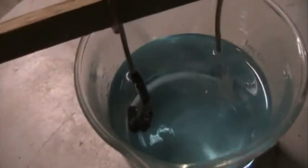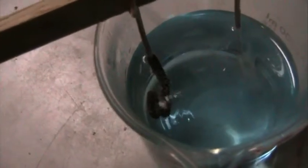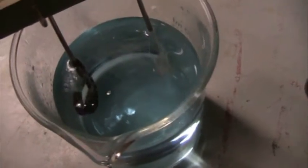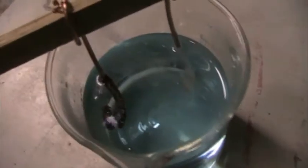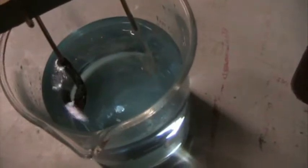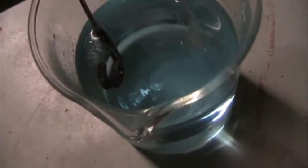Those bubbles that you see, the sort of largish bubbles there and the very fine bubbles coming off of there, those bubbles are hydrogen and oxygen respectively because it's a solution of sulfuric acid in water.